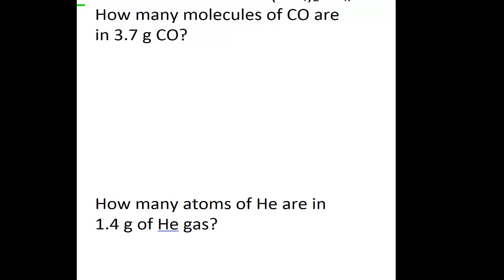Remember, Avogadro's number, which is 6.022 times 10 to the 23rd, tells you how many units of something are in one mole of a substance. So you could have the number of atoms in a mole, the number of molecules in a mole, or the number of ions or formula units in a mole. Let me illustrate this through these examples.